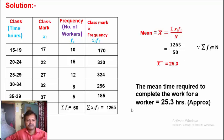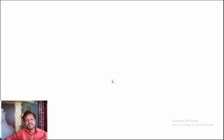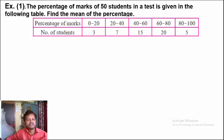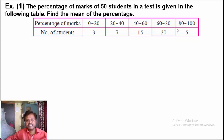So we solved the first example. Now in our textbook there are some solved examples. Example 1: The percentage of marks of 50 students in a test is given in the following table. Find the mean of the percentage. Solution: